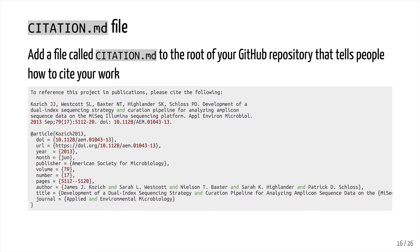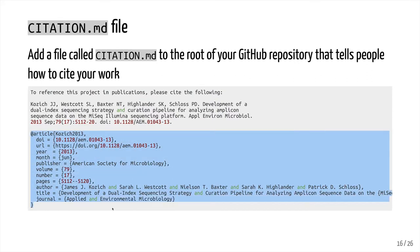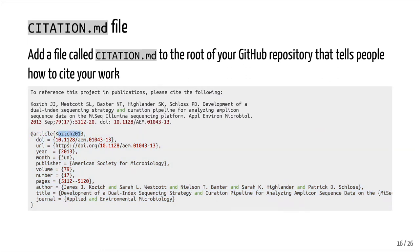Another thing we can use is a citation file that we put in the root of our GitHub repository. This will tell people how to cite our work. For example, for the Kozich paper, we could say 'if you reference this paper in publications, please cite the following,' and then provide the BibTeX format that people can copy and paste into their reference.bib file and cite Kozich 2013 in their paper. It's another way to proactively tell people how you want your work to be recognized.